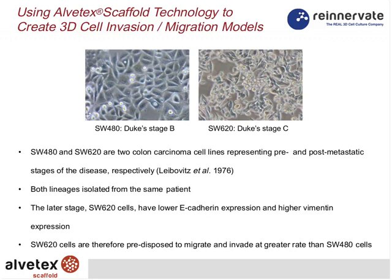We use two cell lines derived from the same patient, representative of different stages of colon cancer progression: Duke stage B SW480 and Duke stage C SW620 — both widely used in scientific literature and available from the ATCC repository. SW620 cells have lower E-cadherin expression and higher vimentin expression, predicting that SW620 cells are predisposed to migrate and invade at a greater rate than SW480 counterparts.